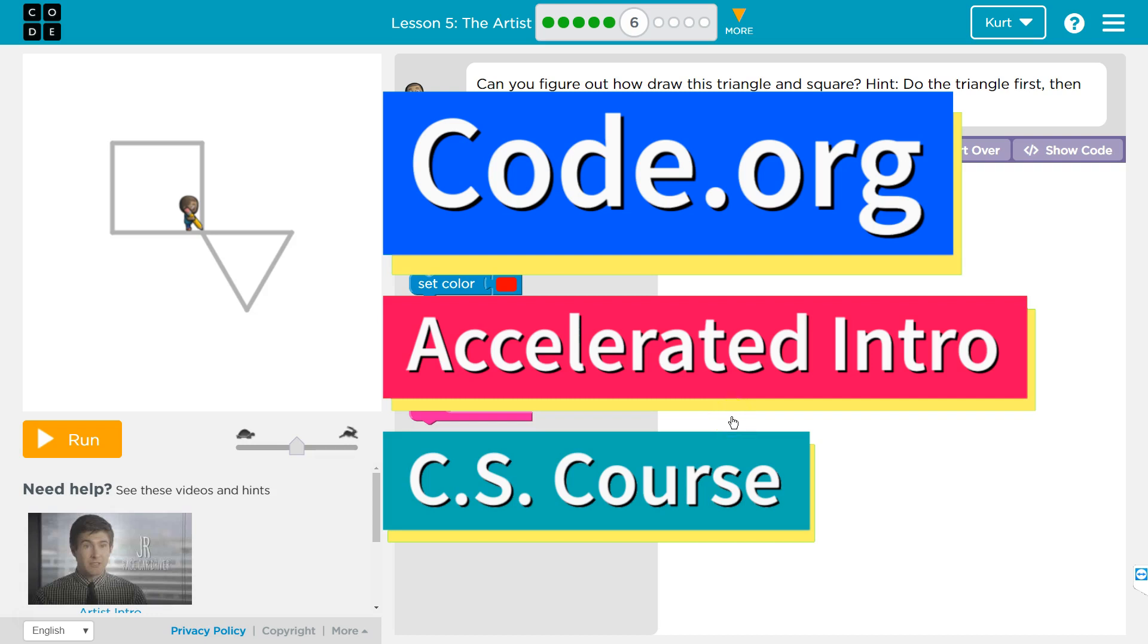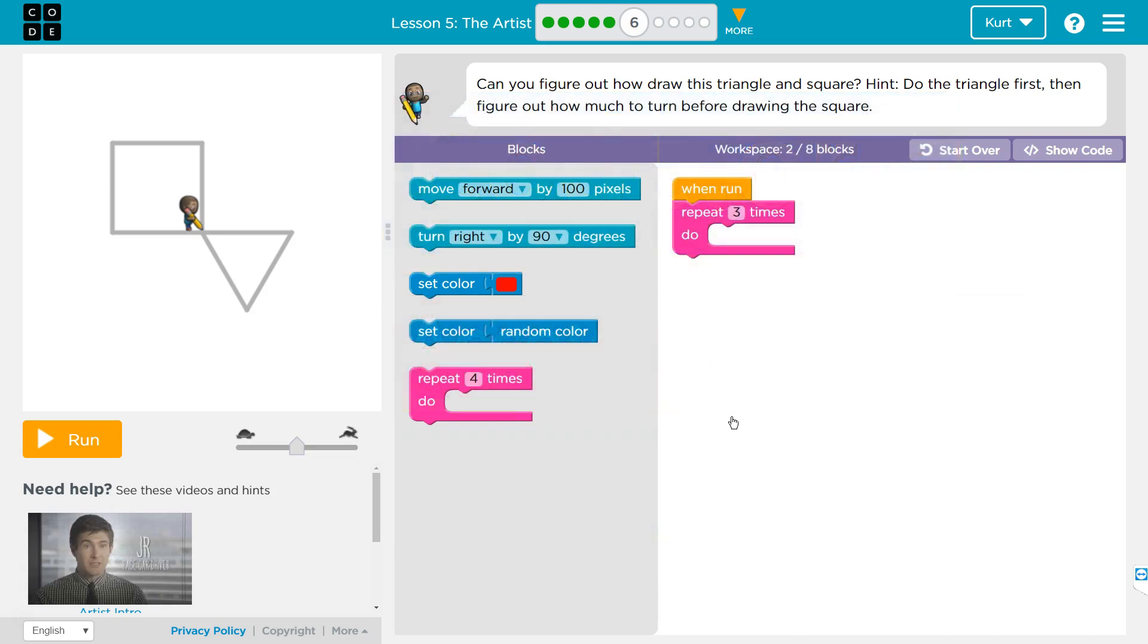This is Code.org and I'm working on the accelerated intro to computer science. The lesson I'm on is the artist. Can you figure out how to draw this triangle and square? Do the triangle first, then figure out how much to turn before drawing the square.